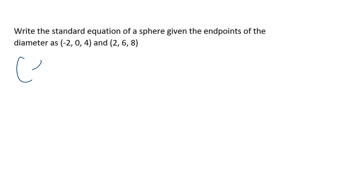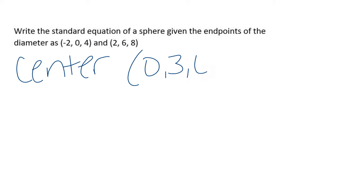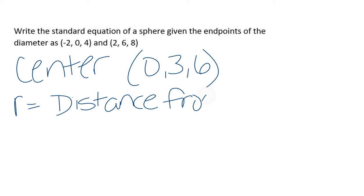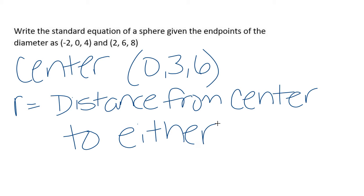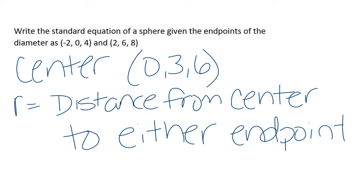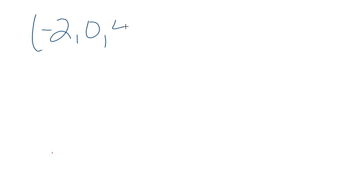Now we need our radius. The radius is the distance from the center to either endpoint. So we're going to take the distance from the center to either of the endpoints to get our radius. Let's take the first point — there's no real reason to pick one over the other, but if you hate negative numbers you could use (2, 6, 8). We want to find the distance between negative two, zero, four and our center, zero, three, six.